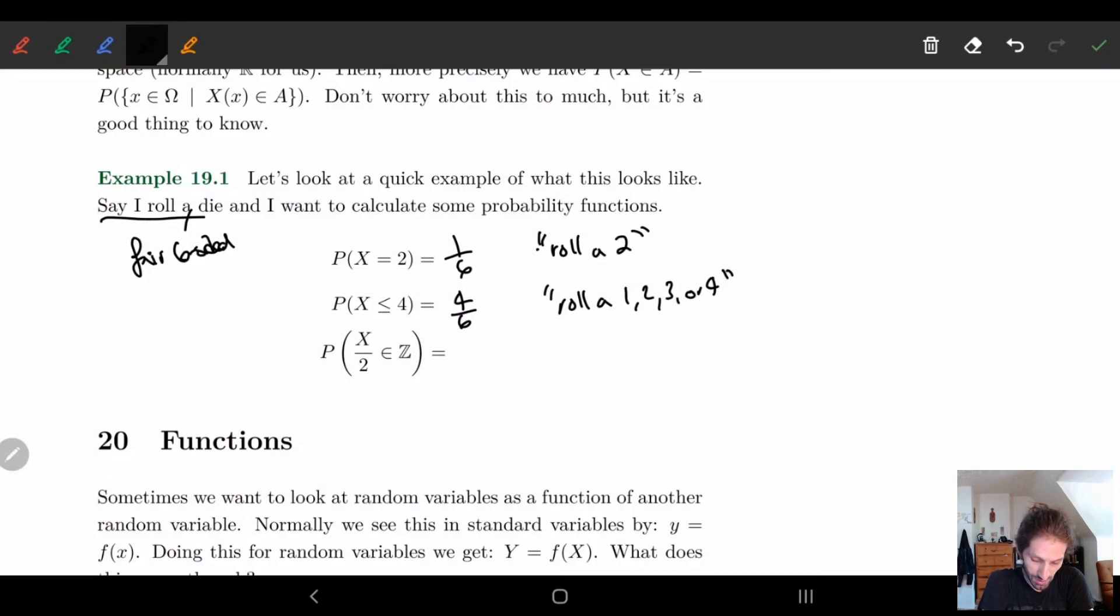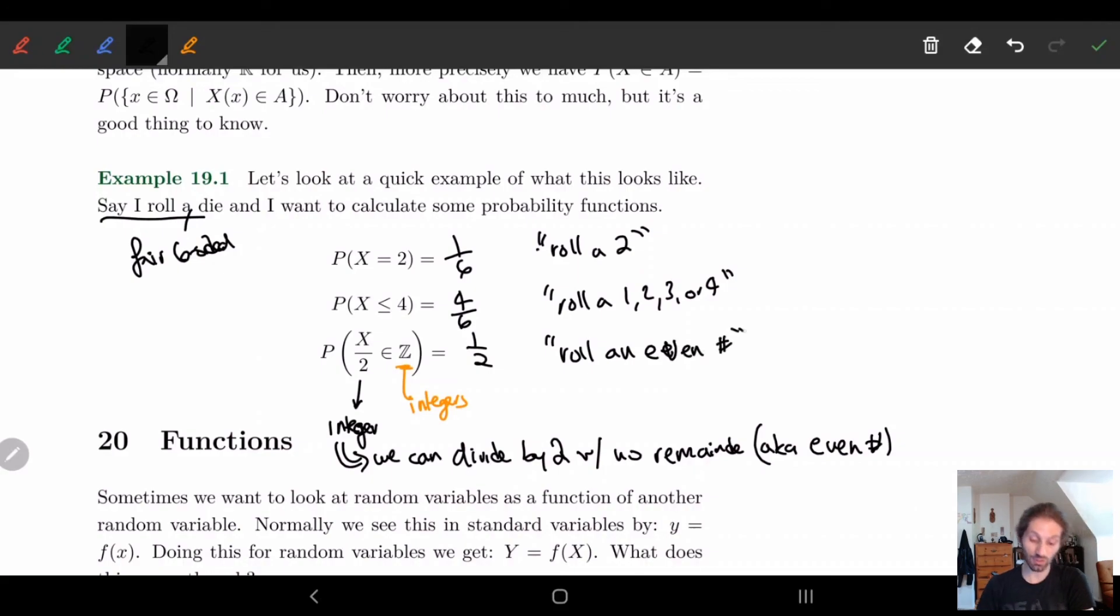We can also look at something a little more complicated. What's the probability that X divided by two is an integer? So if you're not used to this, this is the set of integers. What is this saying? This is saying that X divided by two is integer. That means this implies we can divide by two. Divide by two with no remainder, aka even number. So this is just one-half because half of them are even. So this is roll an even number. And you can start seeing how powerful this kind of new random way of doing things with a random variable, how this is going to be very powerful for future things.